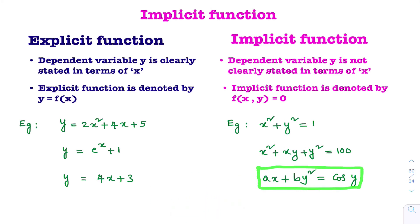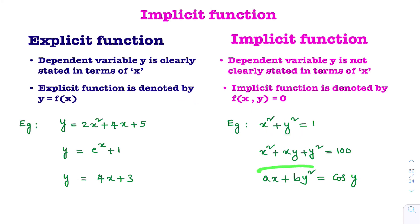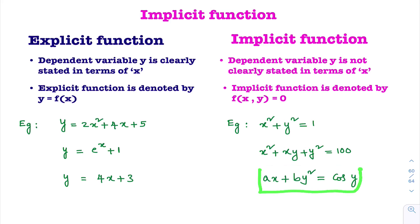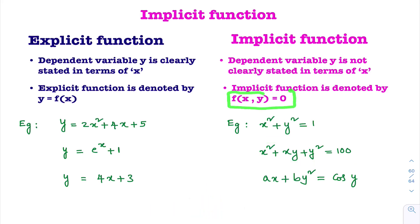And one more thing: here, you cannot convert this into an explicit function, unlike x² + y² = 1 which can be converted. For ax + by² = cos y, you cannot state y clearly in terms of x because cos y is there. Whenever you see equations like x² + y² = 1, x² + xy + y² = 100, or any equation in terms of x and y, those equations are known as implicit functions.